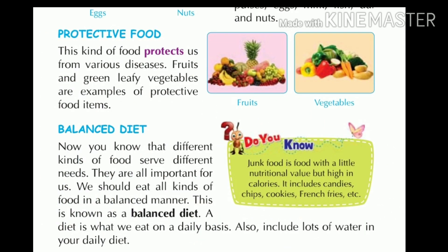Protective food. This kind of food protects us from various diseases. What should we eat? Fruits and green leafy vegetables are protective food items — for example, mango, banana, apple, and vegetables.